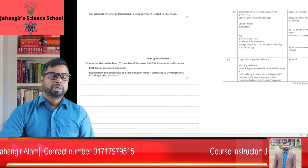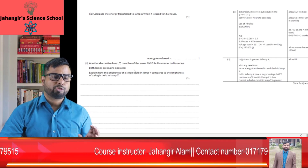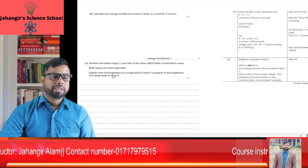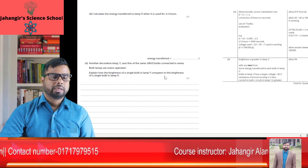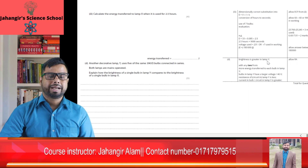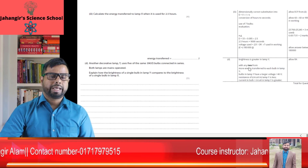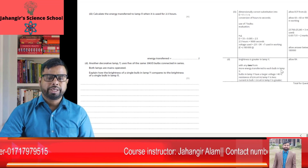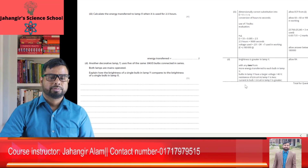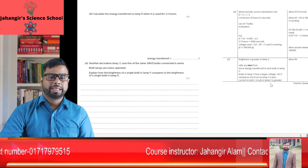Another decorative lamp Y uses 5 of the same 390-ohm bulbs connected in series. Both lamps are mains operated. Explain how the brightness of a single bulb in lamp Y compares to a single bulb in lamp X. The brightness is greater in lamp Y because more energy is transferred to each bulb. Bulbs in lamp Y have a larger voltage across them, the resistance of the circuit in lamp Y is less, and therefore the current in the circuit of lamp Y is greater.